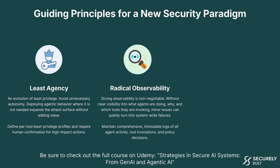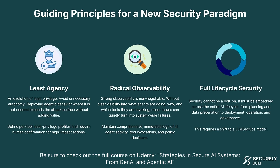Second is radical observability. Strong observability is non-negotiable. Without clear visibility into what agents are doing, why, and which tools they're invoking, minor issues can quietly turn into system-wide failures. We need to maintain comprehensive, immutable logs of all agent activity, tool invocations, and policy decisions. Third is full lifecycle security — security cannot be bolted on. It must be embedded across the entire AI lifecycle from planning and data preparation to deployment, operation, and governance, requiring a shift to an LLM SecOps model.